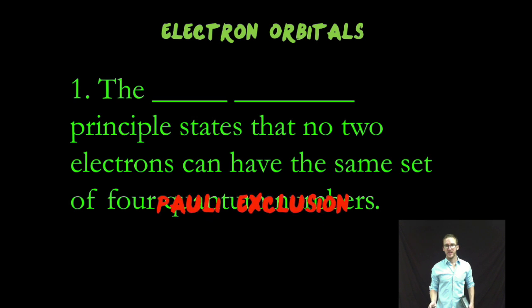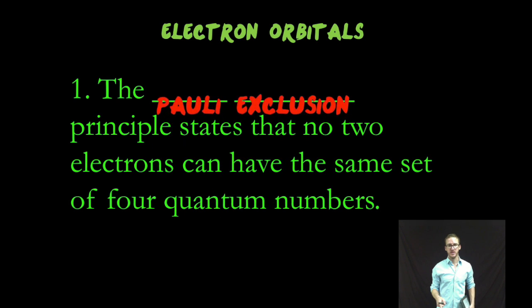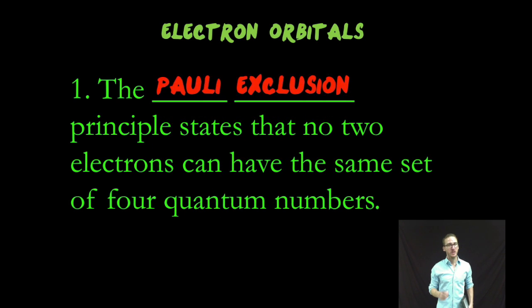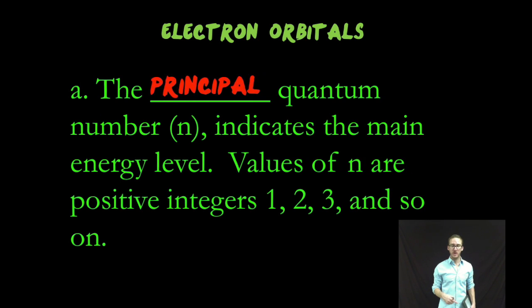First rule to be aware of is that the Pauli exclusion principle states that no two electrons can have the same set of four quantum numbers. Basically, this means that no two electrons can exist in the exact same orbital spinning the exact same way. The first quantum number that the Pauli exclusion principle references is what's known as the principal quantum number. We're going to use the letter N to represent that, and it indicates the main energy level. And your values of N are going to be positive integers: one, two, three, and so on.